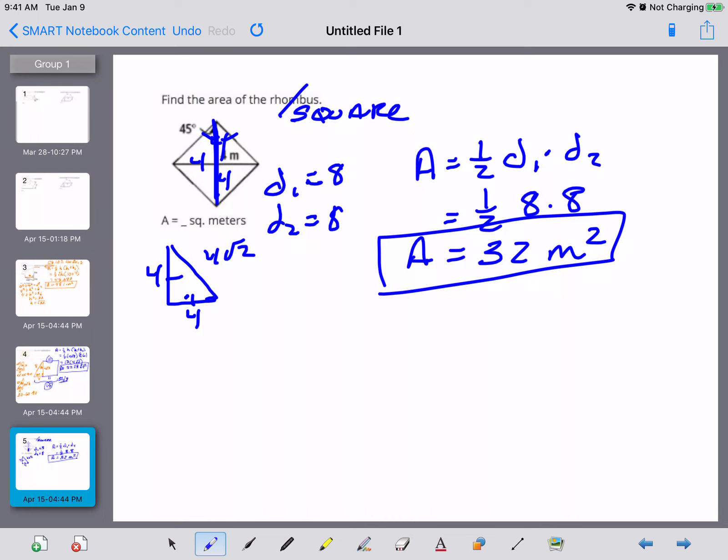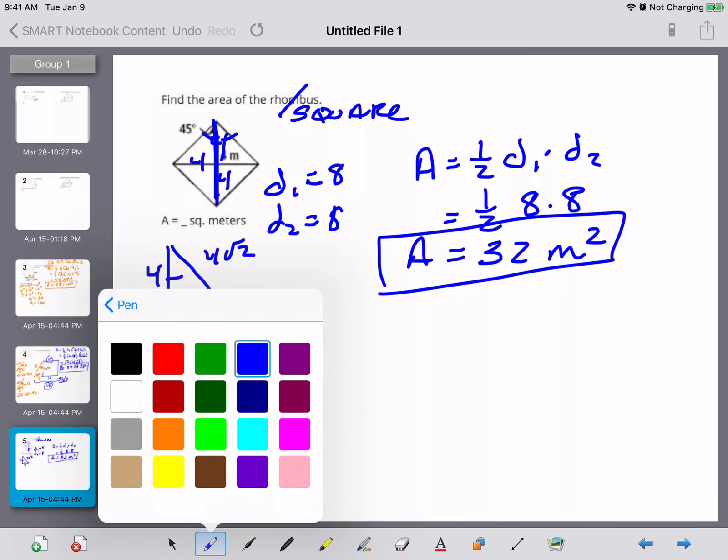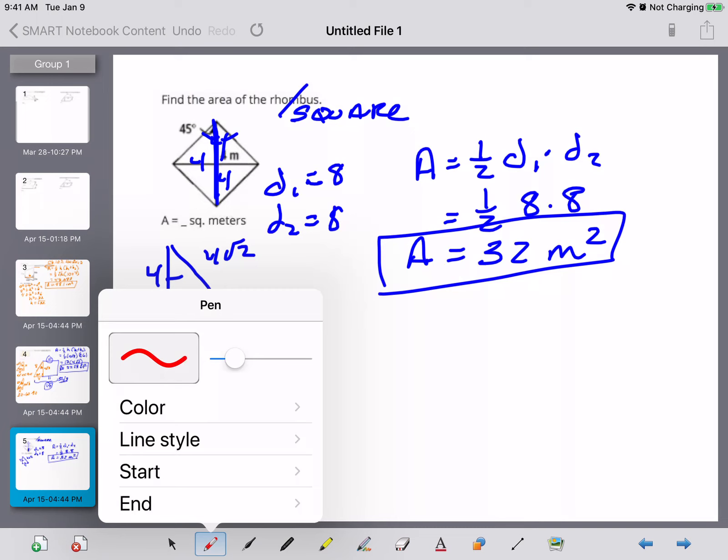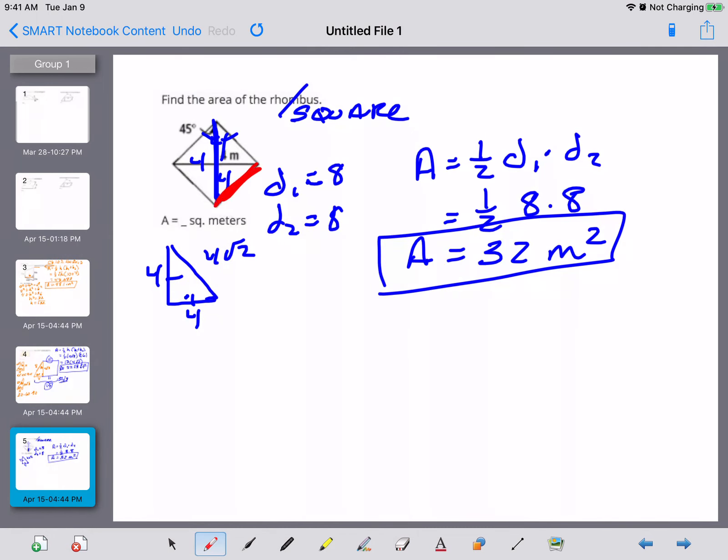So again I can find the diagonals are all eight the same way. But I want to make sure you see that I'm doing a different problem. This length is 4 the square root of 2. Well it's a square. The area of a square is side length squared. And if I have 4 the square root of 2 squared that is sixteen times two which is just thirty two meters squared. So it's another way of me finding my answer.